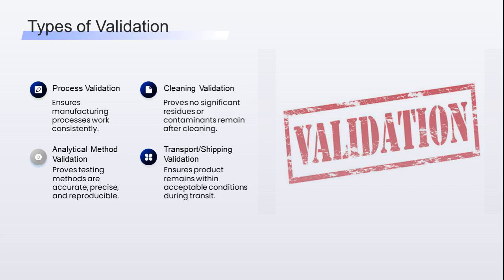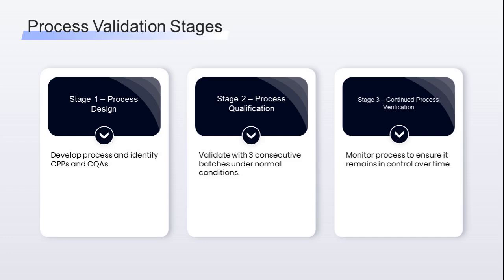Transport and shipping validation ensures product remains within acceptable conditions, such as temperature, during transit. As per FDA, there are three process validation stages. Stage 1 is process design: develop your process, identify CPPs — critical process parameters — and CQAs — critical quality attributes. Stage 2 is process qualification: this is the validation batches stage. Usually three consecutive batches are run under normal conditions.